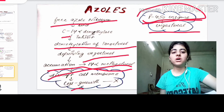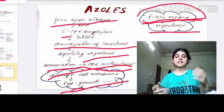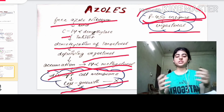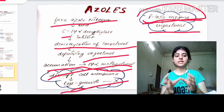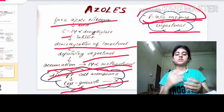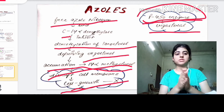Because ergosterol is not formed and 14-alpha-methyl sterol accumulates, cell growth, cell function, and all cell structure are destroyed, ultimately damaging the fungal cell.